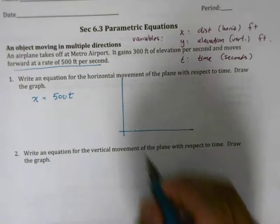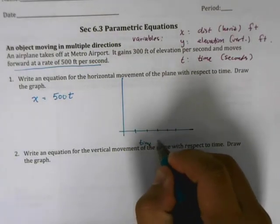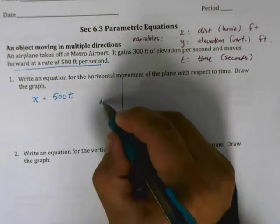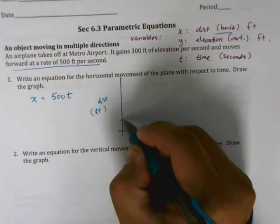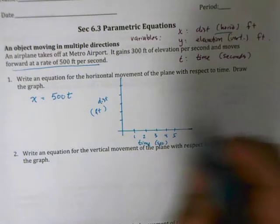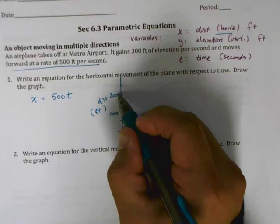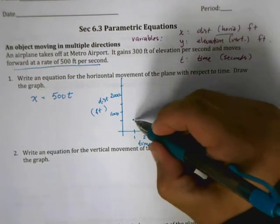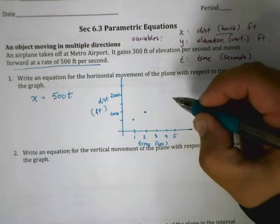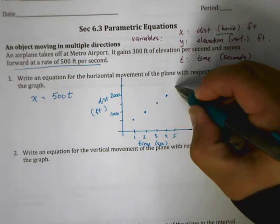On the graph, we'll go about five seconds: one, two, three, four, five — this is time in seconds. The vertical axis is horizontal distance in feet, incrementing by 500 each tick mark. So after one second the plane has traveled 500 feet, after two seconds 1,000 feet, and so on up to five seconds.